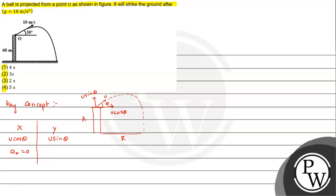For the vertical direction, acceleration is definitely there, that is minus g, which will decelerate this particle and then it will retard.